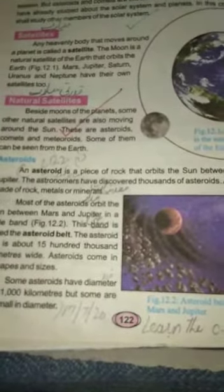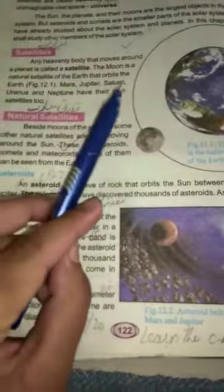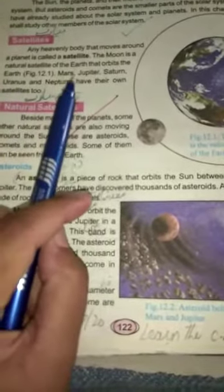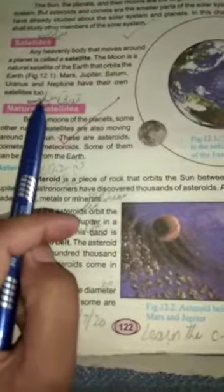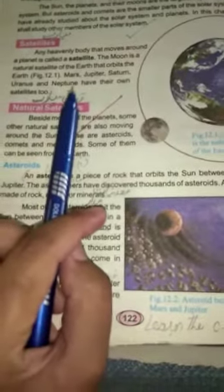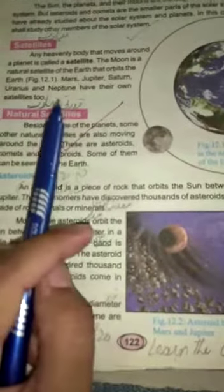The Moon is a natural satellite of the Earth as we know, and it orbits the Earth. Mars, Jupiter, Saturn, Uranus and Neptune have their own satellites too. It means they also have moons which orbit around them.